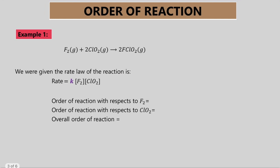So let's look at Example 1. This is a reaction equation between F2 and CLO2 producing FCLO2, and you are given the rate law for this reaction. When we want to determine the order of reaction with respect to F2, we look at F2 in that rate law equation. F2's power is 1, and CLO2's power is also 1. So overall, the order of reaction is 1 plus 1, equal to 2.